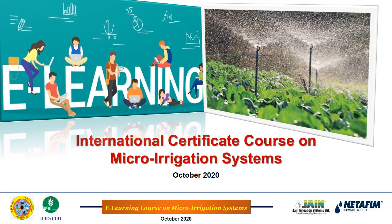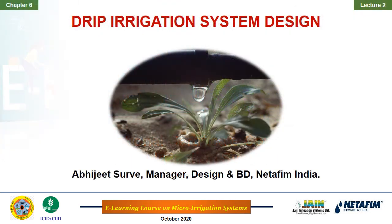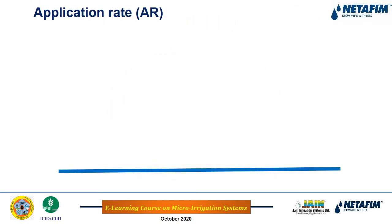Welcome again to the course on micro irrigation organized by ICID. This is chapter 6, lecture 2, on drip irrigation system design. In the first chapter we saw various recommendations — what is design, what is good design. In this chapter we will look at actual design formulas, design steps, and one live example.